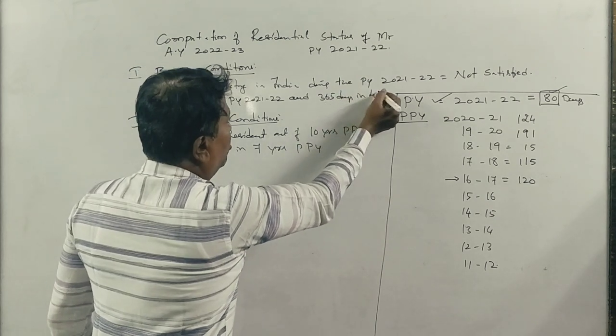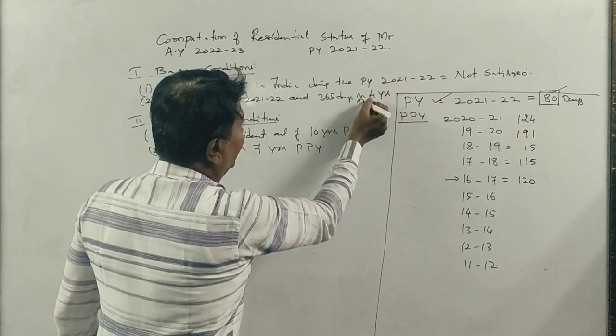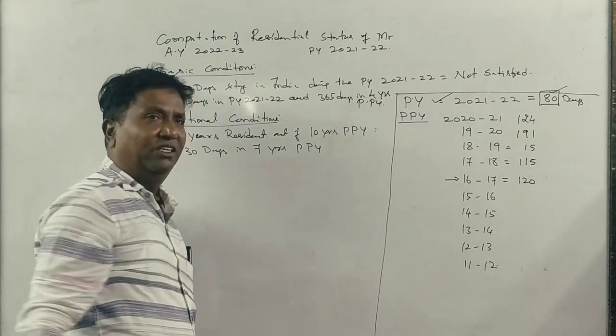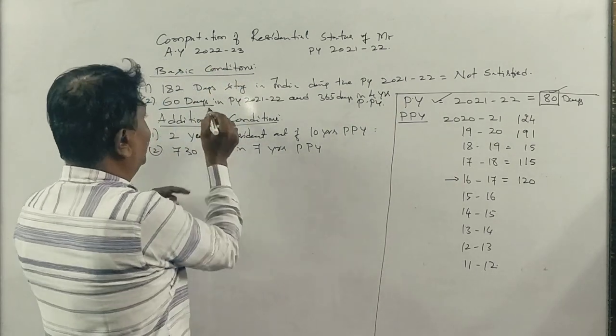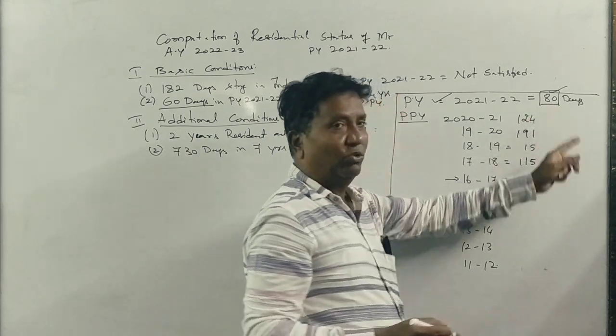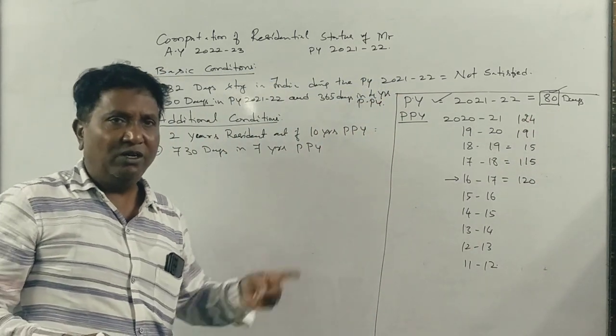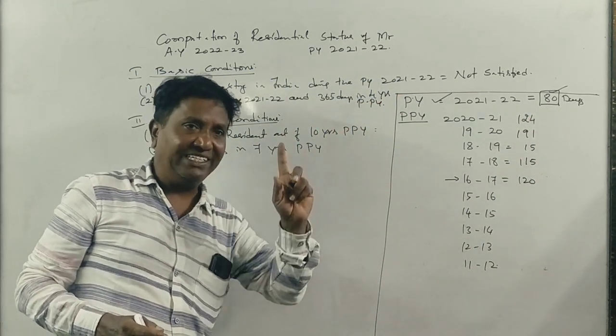In 4 years preceding to the previous year. 60 days in the previous year, 21-22, he stayed for how many days? 80 days, more than 60 days.